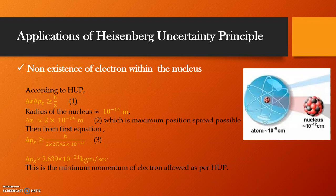Now, since we know the maximum spread of the position from Heisenberg's Uncertainty Principle, we may calculate the minimum value of momentum of the electron in this scenario, the value of which you can see in this slide. Hence, this is the minimum momentum of an electron, allowed as per Heisenberg's Uncertainty Principle, if it was staying within a nucleus.